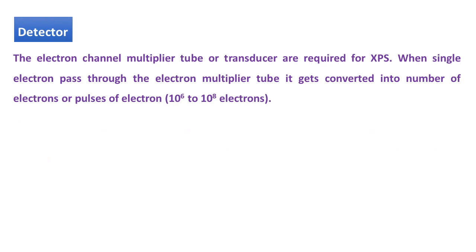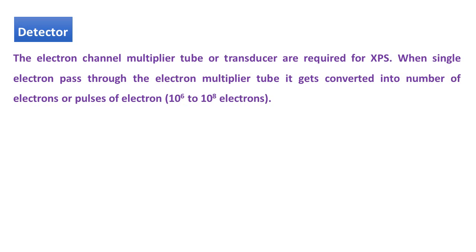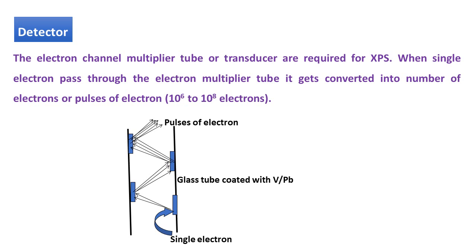The detector. In XPS, detector is electron channel multiplier tube or transducer. When a single electron passes through the electron channel multiplier tube, it gets converted into number of electrons or pulses of electrons, that is 10 to the 6, 10 to the 8 electrons. Here you can see in the diagram: when single electron passes through the glass tube which is coated with vanadium and lead metal atom, when single electron passes through the electron channel multiplier tube, it gets converted into number of electrons or pulses of electrons, that is 10 to the 6 to 10 to the 8 electrons.